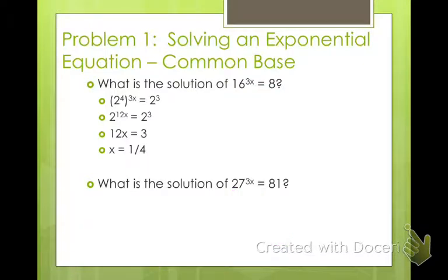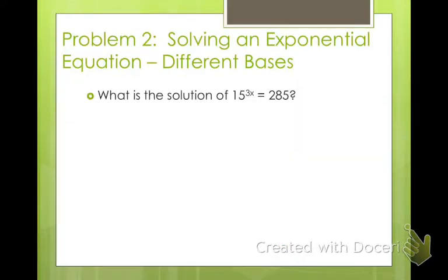Now, when we have different bases, what we have to do - 15 to the 3x equals 285. We can't rewrite this so that we have any number as our base. 15 is the only number that 15 goes into, and 285 is not one of the powers of 15. So what we do is we write this as a logarithm. Log of 15 to the 3x equals log of 285. And then you go ahead and use your logarithmic properties. Bring the 3x out front so that it's 3x log 15 equals log of 285.